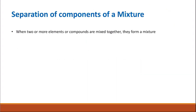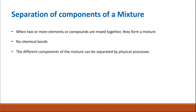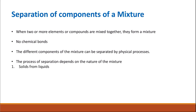A mixture is formed when two or more different elements or compounds are mixed together. There are no chemical bonds between the different components, so they can be separated by simple physical processes. The process of separation will depend on the nature of the mixture — it could be solid with liquid, where the solid is soluble or insoluble, a liquid we want to separate from a solution, a mixture of liquids, or a mixture of solids.